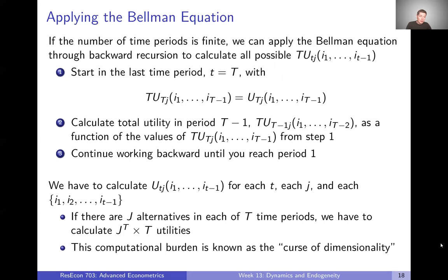This is going to be helpful because if we have a finite number of periods, the way we solve this model is to start in the final period and use the Bellman equation to work backwards — from the last all the way back to the first time period — solving utility values in each time period, which then allows us to construct choice probabilities for the entire sequence of choices.